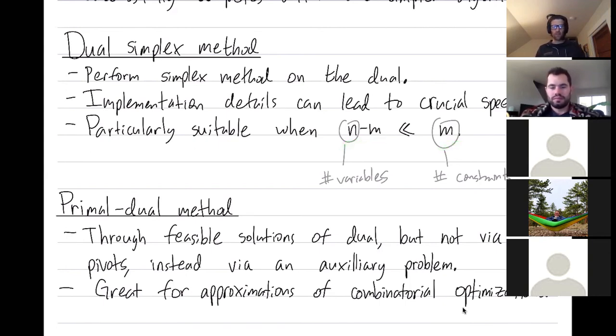Primal dual methods, similar to the dual simplex method, they pass through feasible solutions of the dual, but not via pivot steps. So this is intriguing to me. They instead proceed via an auxiliary problem, an auxiliary linear programming problem to go from one vertex to another.